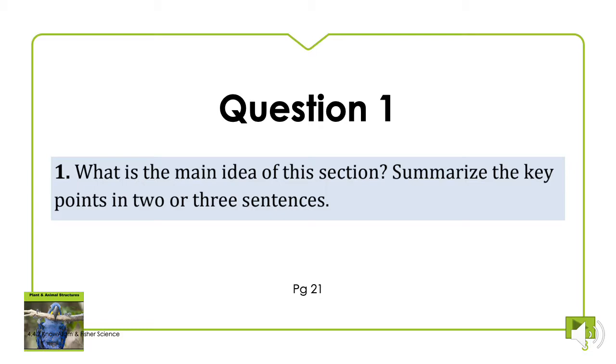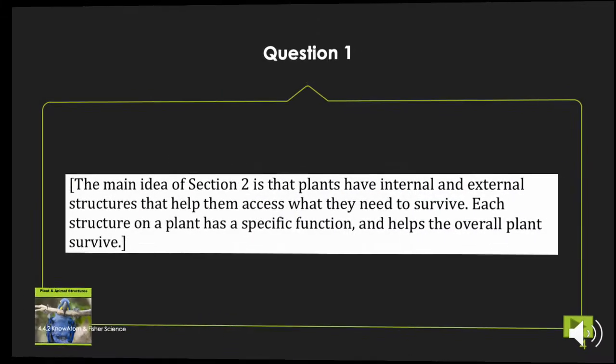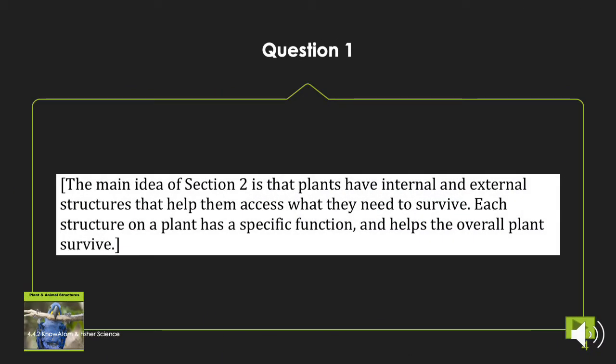So while this whole lesson talked about plants from the wetlands, there was a bigger overarching theme to that lesson. The main idea of our section two is that plants have internal and external structures that help them access what they need to survive. Each structure on a plant has a specific function and helps the overall plant survive. So things inside and outside of the plants that help them survive.